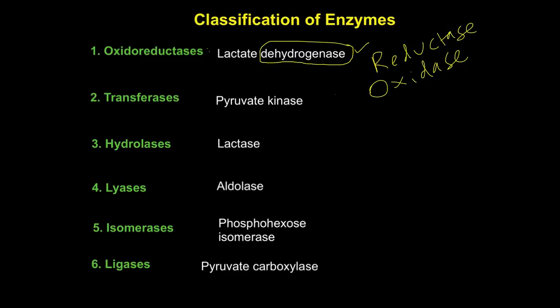The second category is transferases. Transferase enzymes transfer a functional group from one substrate to another. One of the most common groups transferred in our body is phosphate — the transfer of phosphate from ATP into a substrate. Enzymes ending with 'kinase' belong to the transferase category. The example given here is pyruvate kinase.